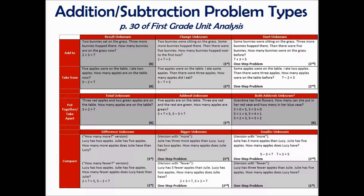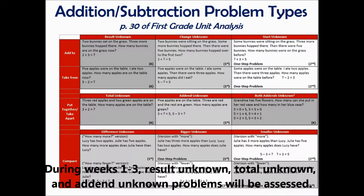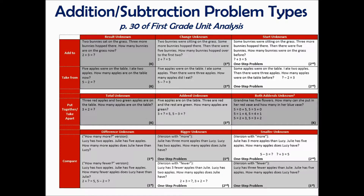On page 30 of your unit analysis, there is a diagram outlining these problem types. In weeks one through three, the unit analysis explains that only certain problem types will be assessed. Some problems require an action and some problems have no action. The problems with actions are easiest to solve. In these problems, students are either physically adding something or physically taking away something from a group. The reason these are easiest to solve is because students can feel that action of adding to or taking away from.